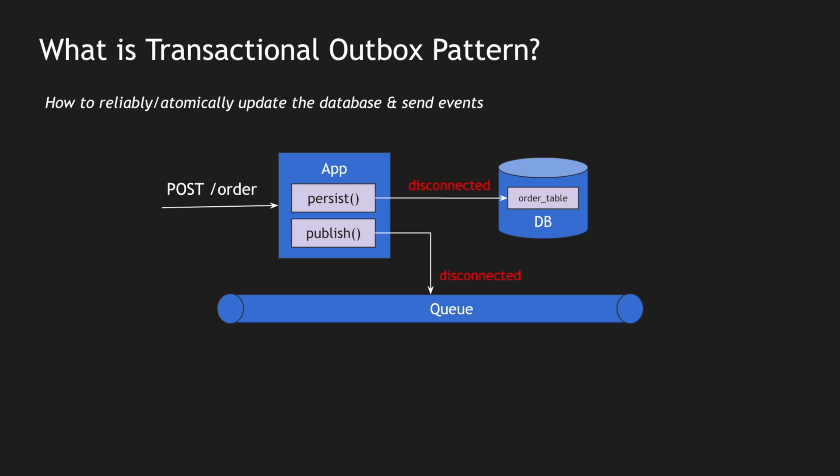Coming to the publishing side: what happens if the queue connection is disconnected? Let's say the order got created with order ID 001. Once the order is created, we need to publish that order ID into the queue. But what if the queue is down? Should the POST order REST endpoint return a success, failure, or something intermediate? This is complicated because we have to handle transactionality between two different systems — a database and a queuing system.